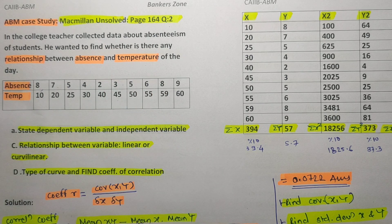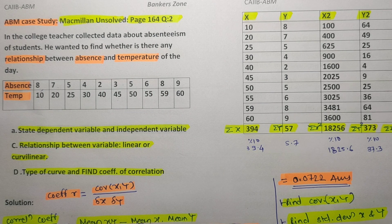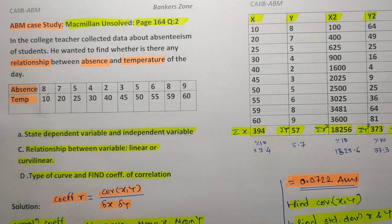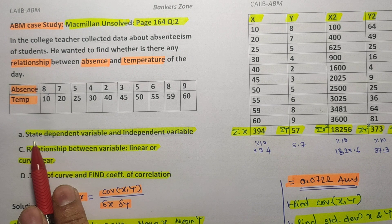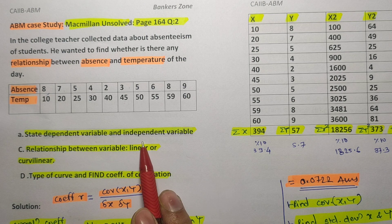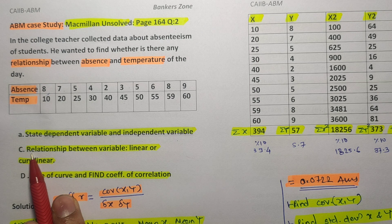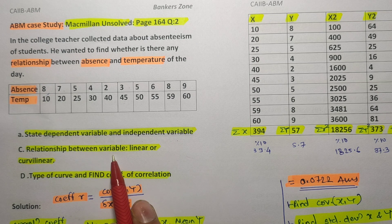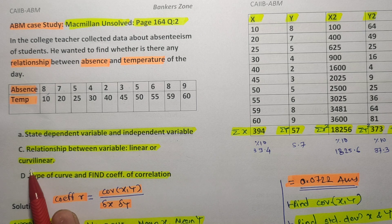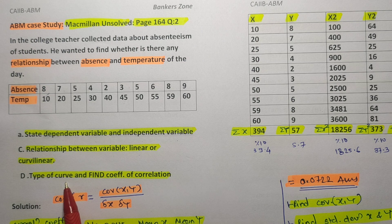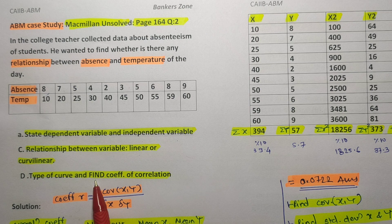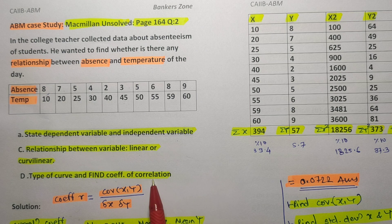The question asks us to: first, state the dependent variable and the independent variable; third, identify the relationship between the variables — whether it is a linear or curvilinear relationship; and finally, find the nature of the curve and the coefficient of correlation, which is the most important part.